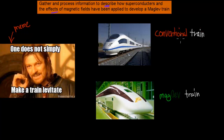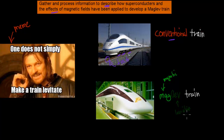We have our conventional trains which run on tracks. Obviously you're going to have friction being produced between the wheels, and just normal kind of movement. Whereas Maglev trains are quite different. 'Mag' comes from magnetic and 'Lev' comes from levitation - so magnetic levitation. These trains use magnetic levitation to move from one place to the next. They're not using any direct tracks, they're not in contact - they're almost hovering, they're levitating.